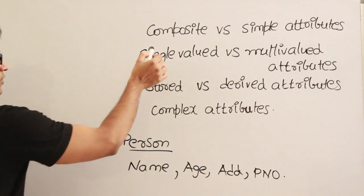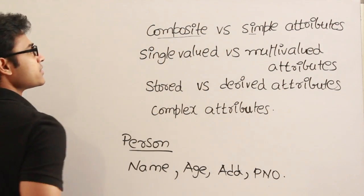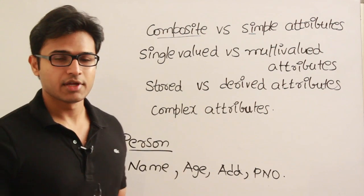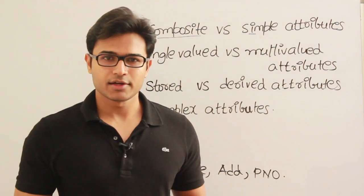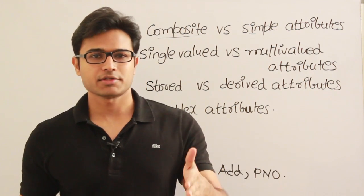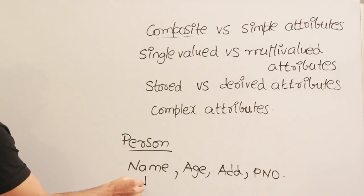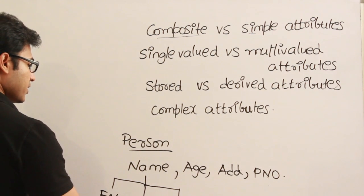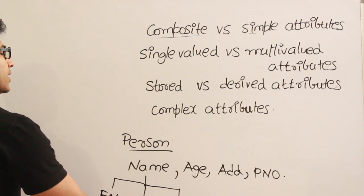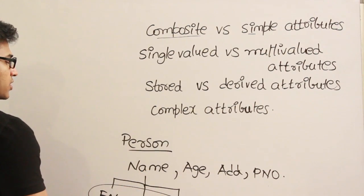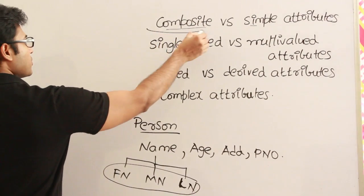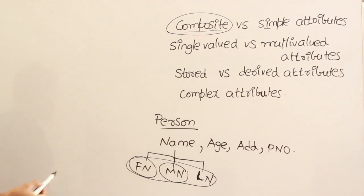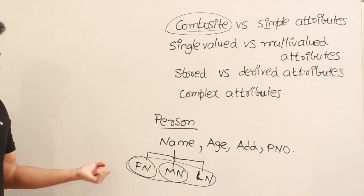First, we can classify attributes as simple attributes and composite attributes. Simple means the attribute cannot be divided further. Composite means it can be divided further. For example, if you take name, we can divide it into first name, middle name, and last name. So name is composed of three parts — first name, middle name, and last name. That is why it is called a composite attribute.